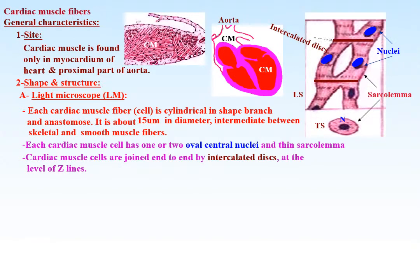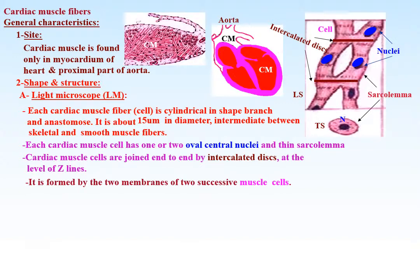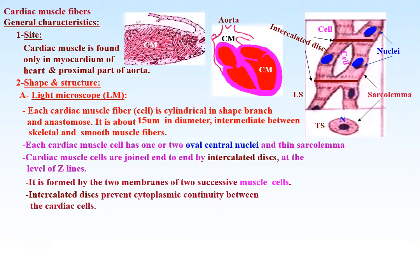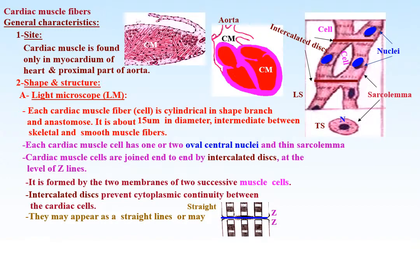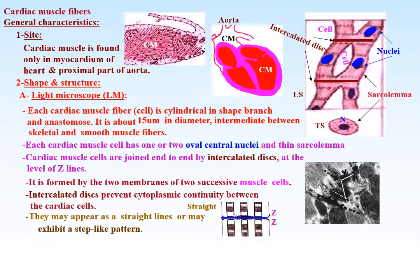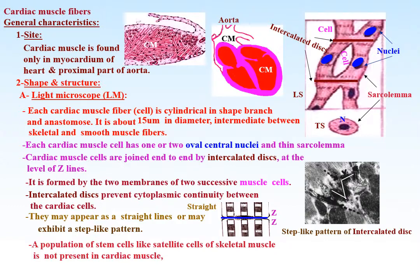Cardiac muscle cells are joined end-to-end by intercalated discs at the level of the Z lines. The intercalated disc is formed by the two membranes of two successive muscle cells. Intercalated discs prevent cytoplasmic continuity between cardiac muscle cells and may appear as straight lines or exhibit a step-like pattern. A population of stem cells like satellite cells of skeletal muscle is not present in cardiac muscle; therefore, regeneration after damage cannot occur.